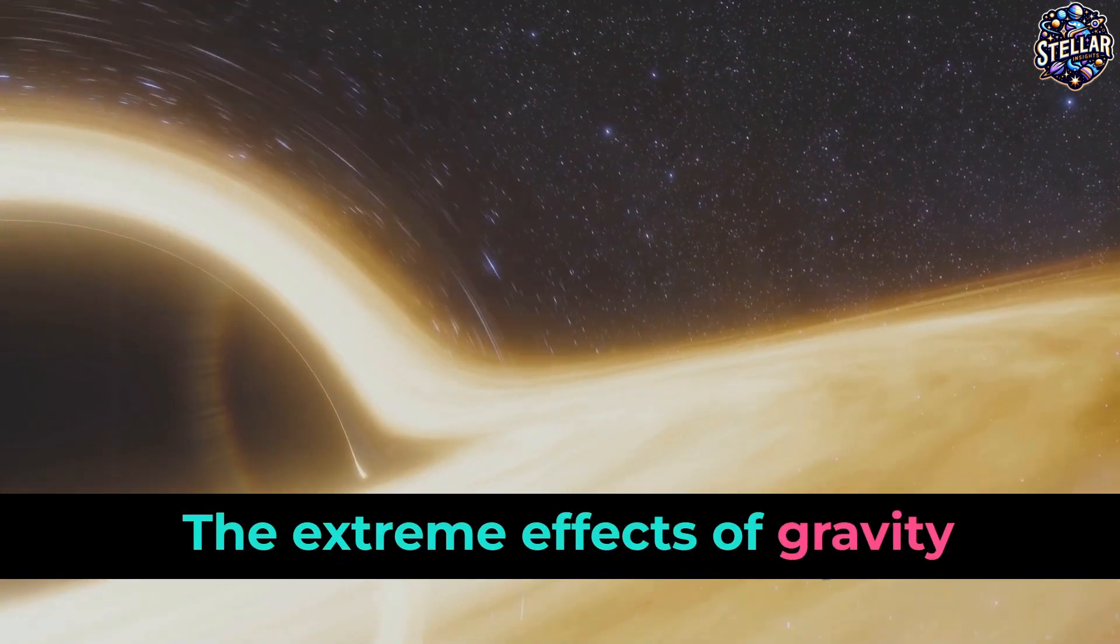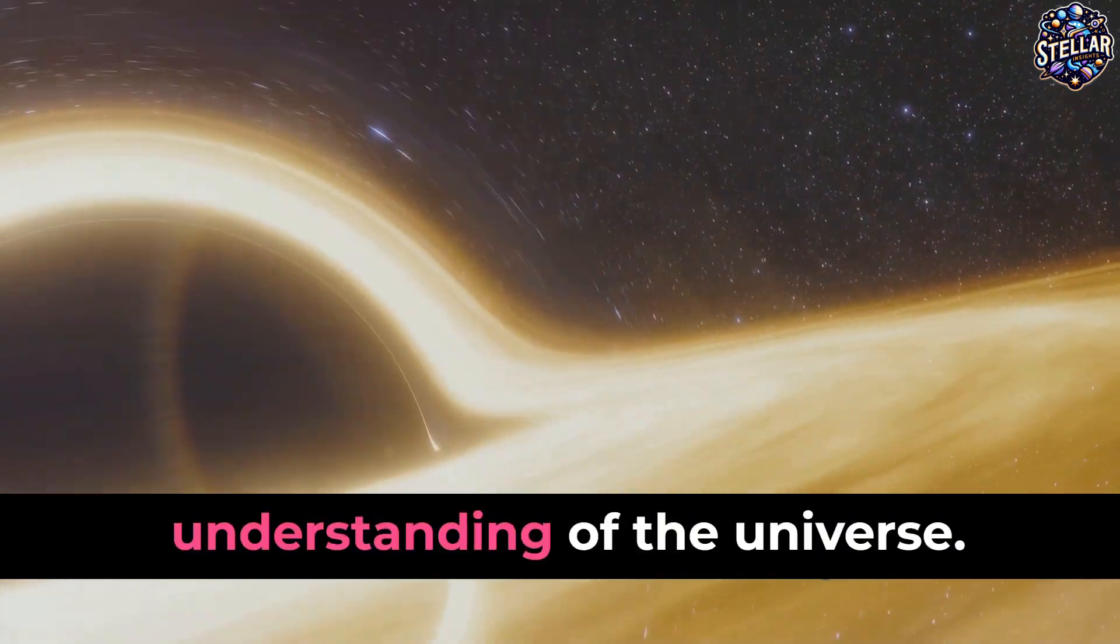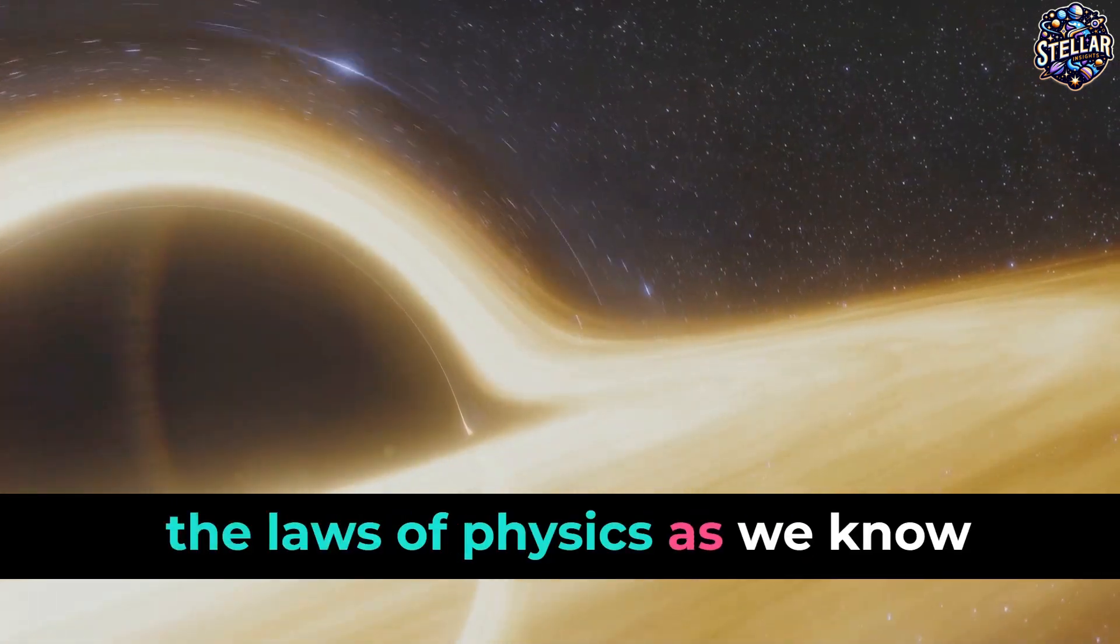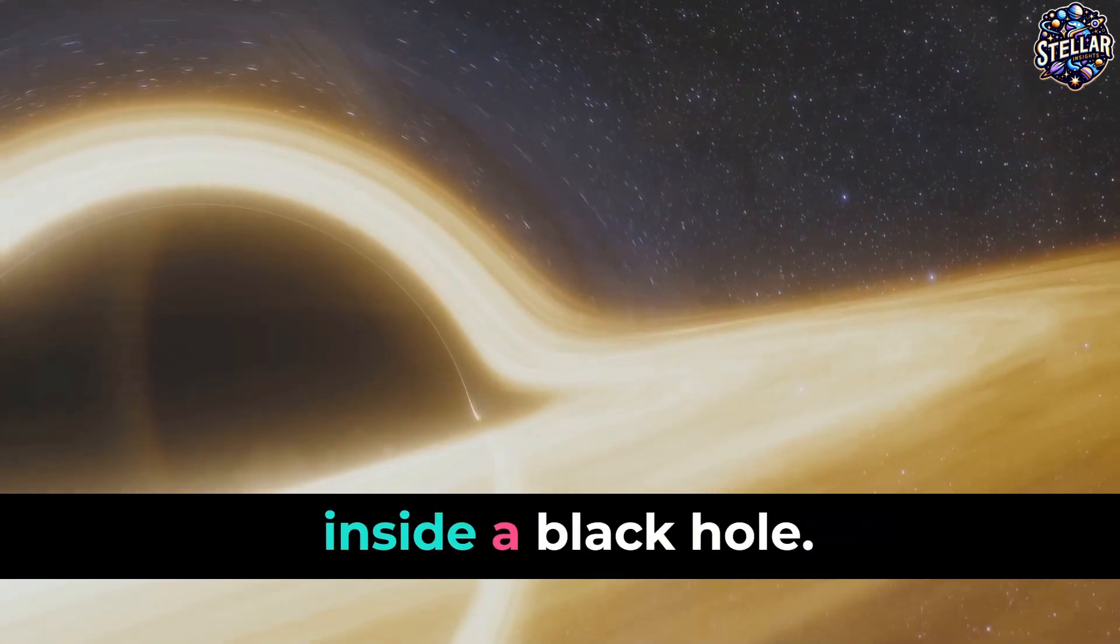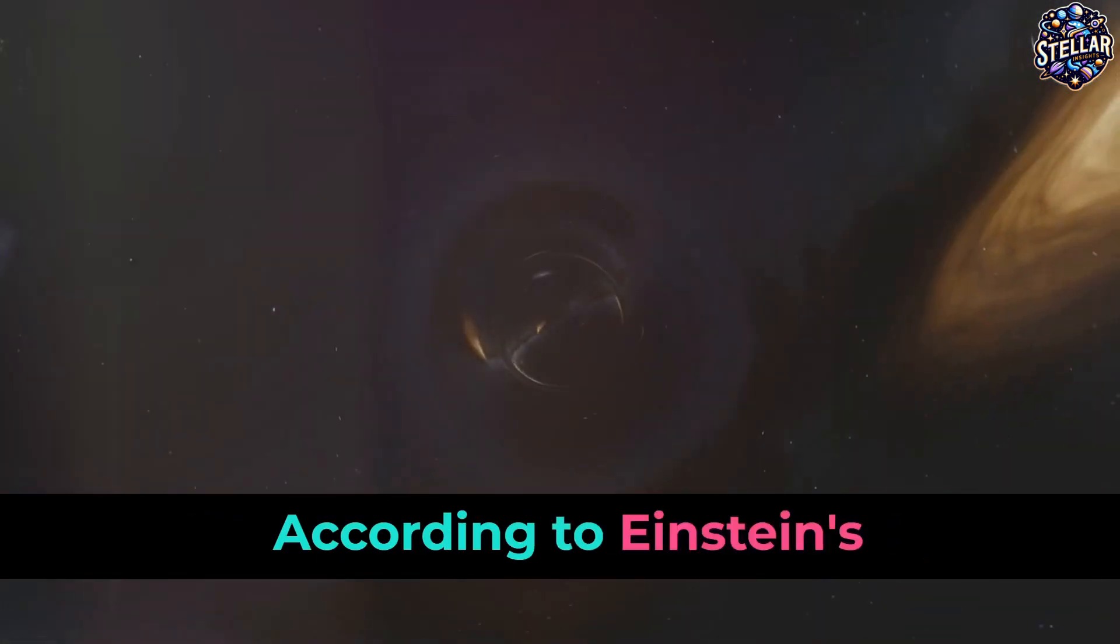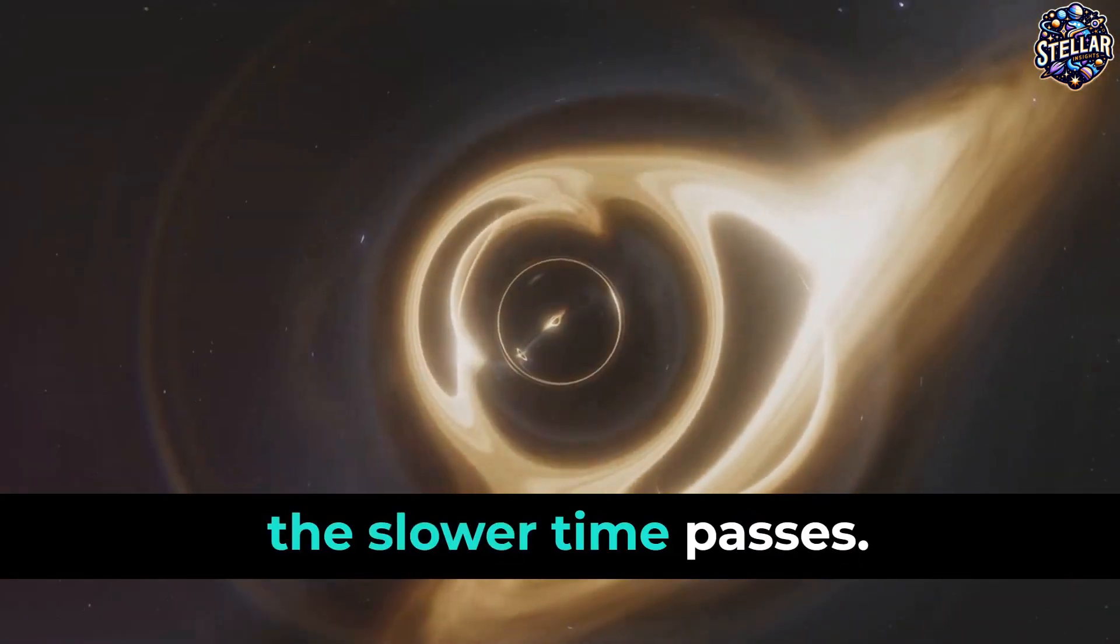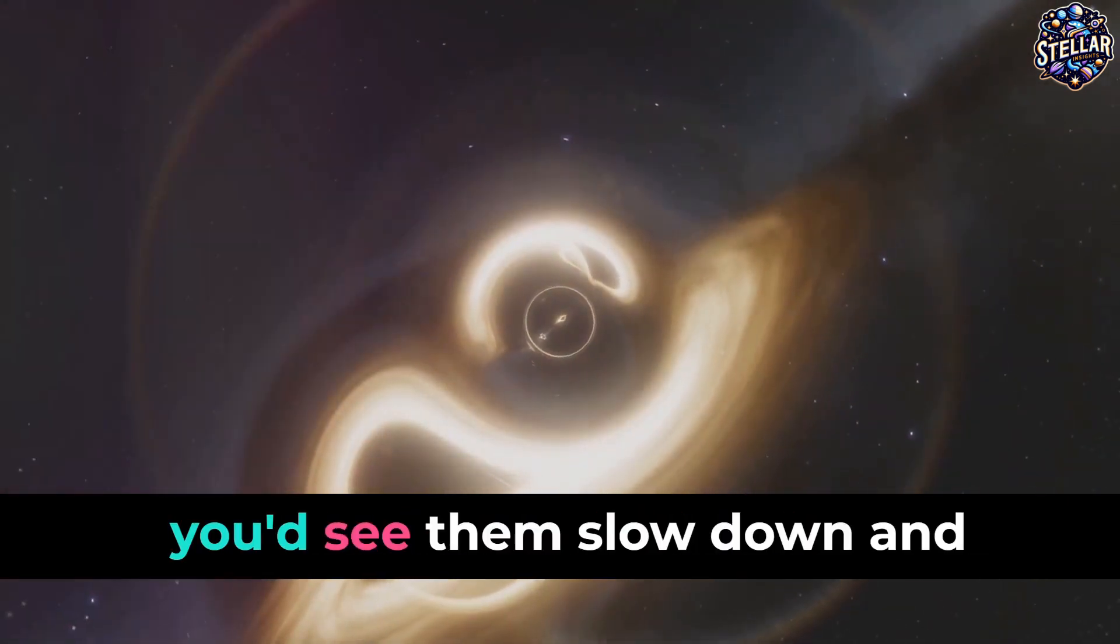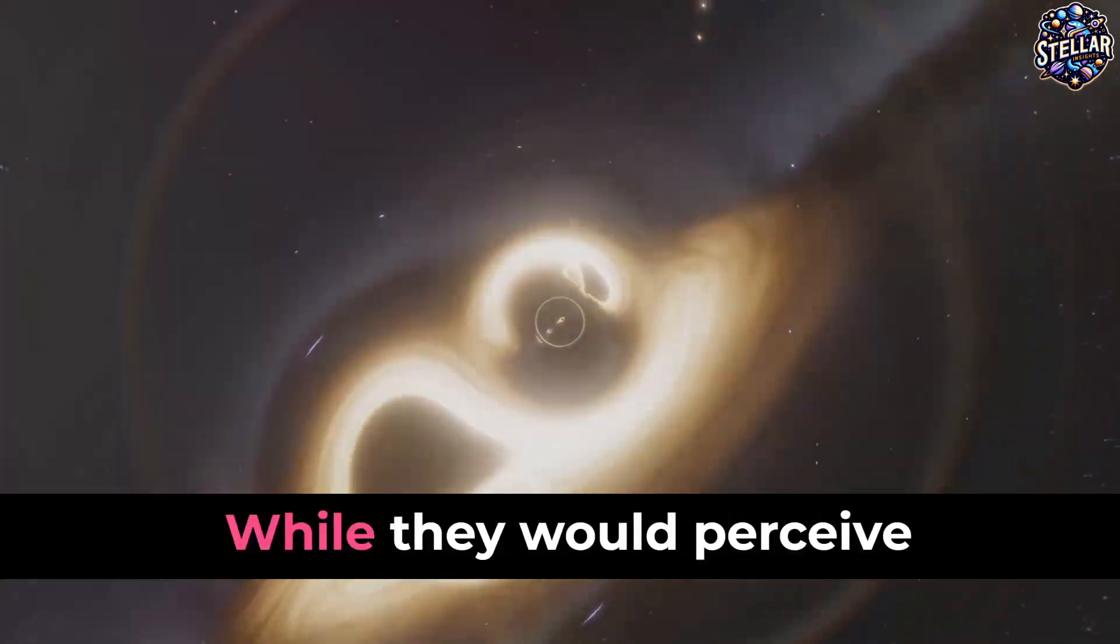The extreme effects of gravity within a black hole are so bizarre that they challenge our understanding of the universe. Inside a black hole, the laws of physics as we know them cease to apply. For instance, time itself behaves differently inside a black hole. According to Einstein's theory of relativity, the stronger the gravity, the slower time passes. So if you were to watch someone fall into a black hole from a safe distance, you'd see them slow down and eventually appear to stop at the event horizon while they would perceive themselves as falling in normally.